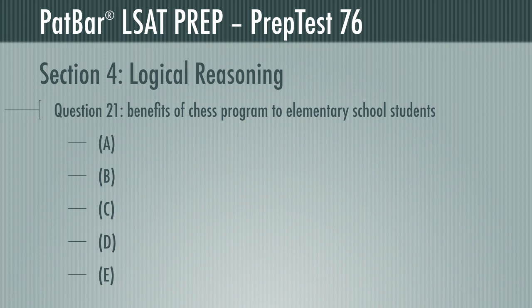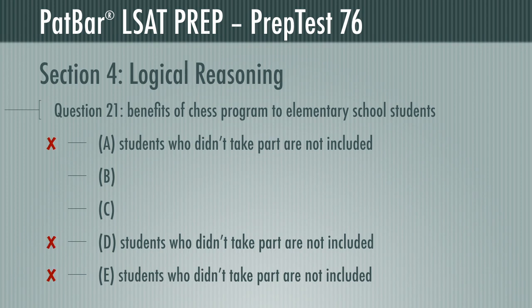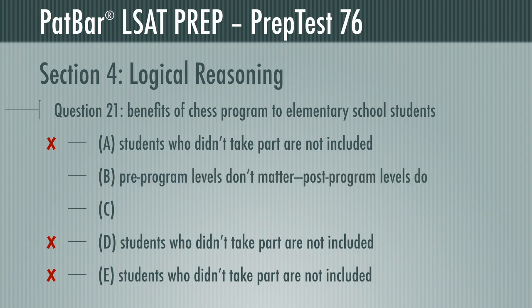Three of these possibilities are straight-up misdirection. The students who did not participate in the program are not presented in the passage or its conclusion in any way—regardless of whether they learned chess at home, participated in study, or were already more talented at playing chess. B is tempting, but it too is a misdirection. The study is presented as showing increased achievement levels among the students who completed the program. Their levels before don't matter, only that they increased afterward. B does not weaken the conclusion.